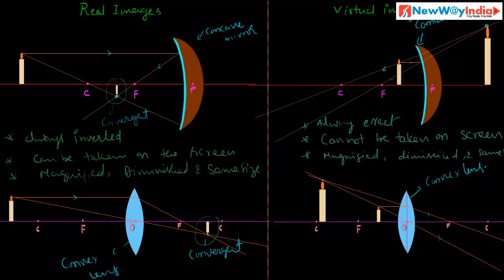In conclusion: when reflected or refracted rays converge at one point, then a real image is formed. When reflected or refracted rays appear to diverge from some point, then a virtual image is formed. Real images are always inverted; virtual images are always erect.